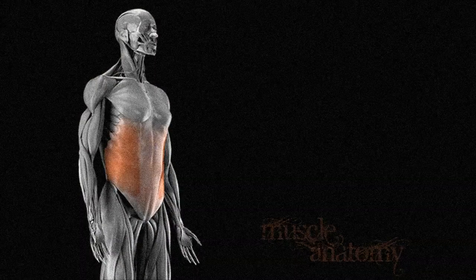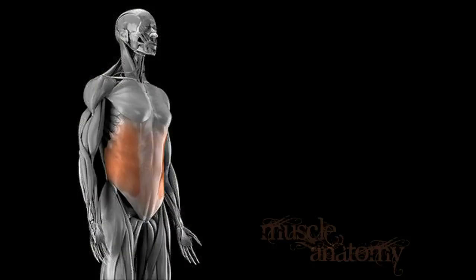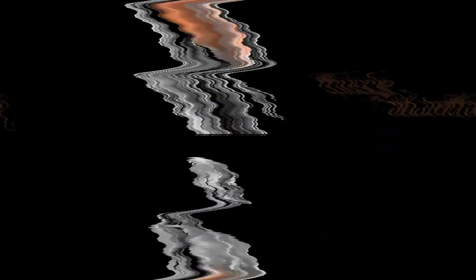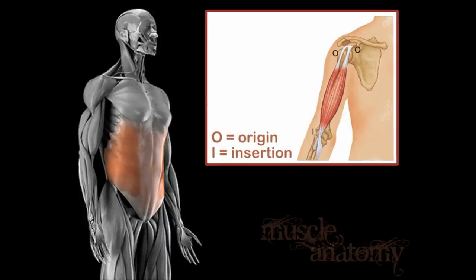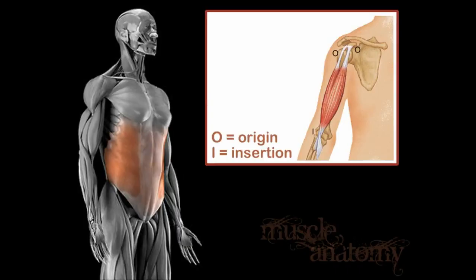Before I get started, I wanted to go over some general basics. Remember that the origin of a muscle is going to be the attachment site to the bone that does not move, and the insertion is going to be the attachment site of the bone that does move.